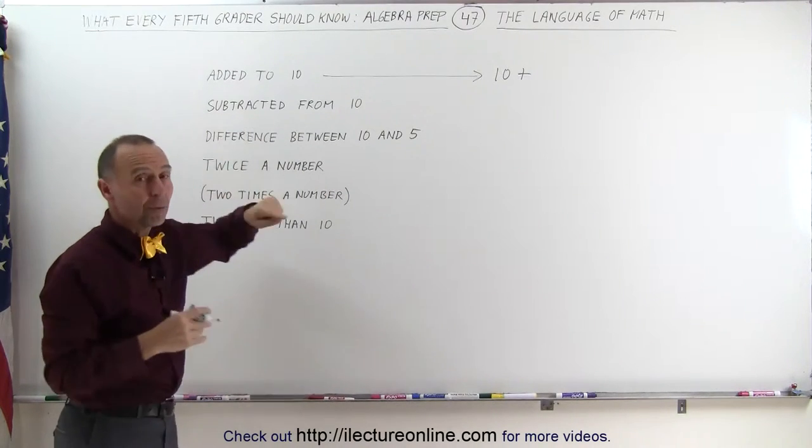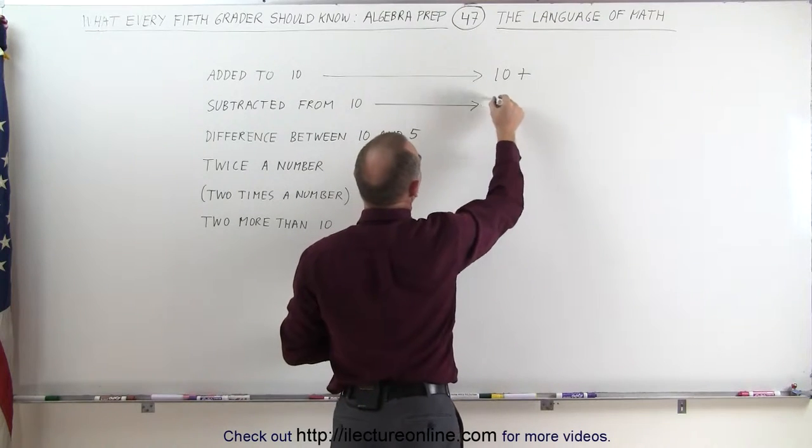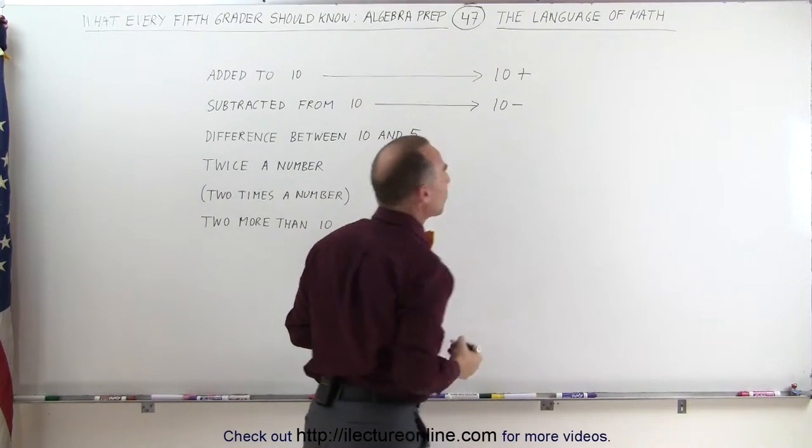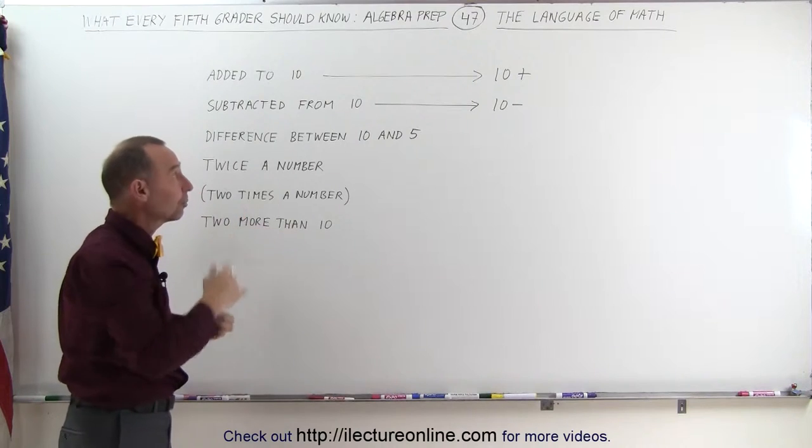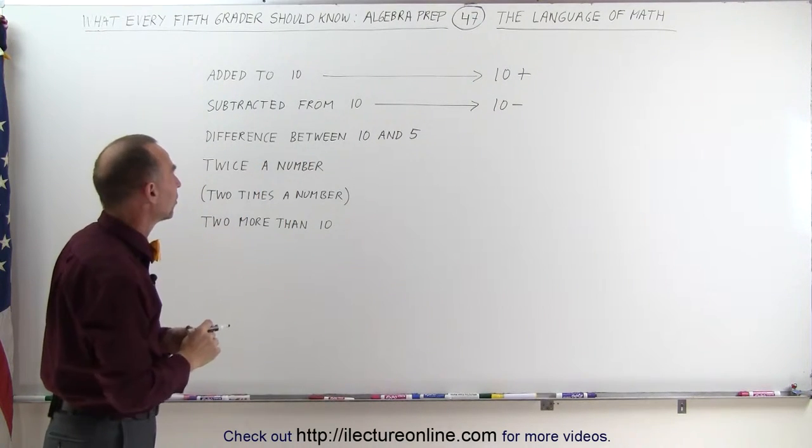If you say subtracted from a number, in this case the number 10, then you would write this as 10 minus whatever you subtracted from 10. So added to means you add something to the number 10, subtracted from means you're going to subtract something from the number 10.